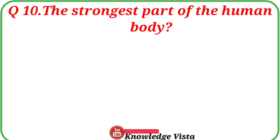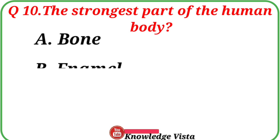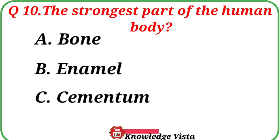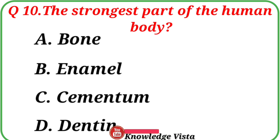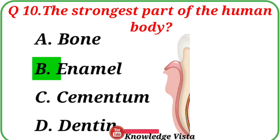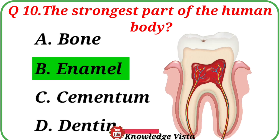Question number 10: The strongest part of the human body. Your options are: A. Bone, B. Enamel, C. Smuntum, D. Dentin. Correct answer is option B, Enamel. The strongest part of the human body is enamel.